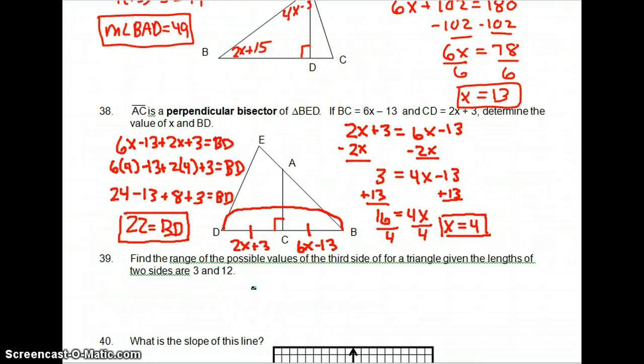39. Find the range of the possible values of the third side. Okay. This time we say range and possible values of the third side. So we need to use that. Again, we're going to subtract the two sides on this end, which is 9 less than the third side, which is less than 12 plus 3, which is 15. So that's our range.